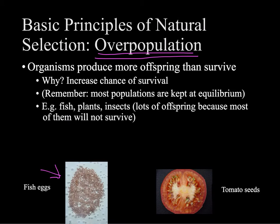We can see good examples of this with fish — thousands of fish eggs, and most of them won't make it. Most of those eggs won't develop into fish that live long enough to find a mate and reproduce. Or if you cut up a fruit or vegetable and look at all those seeds — if I threw a tomato in my backyard in the fall, I wouldn't find 200 tomato plants there in the summer, but I might find one or two from the seeds of that tomato.